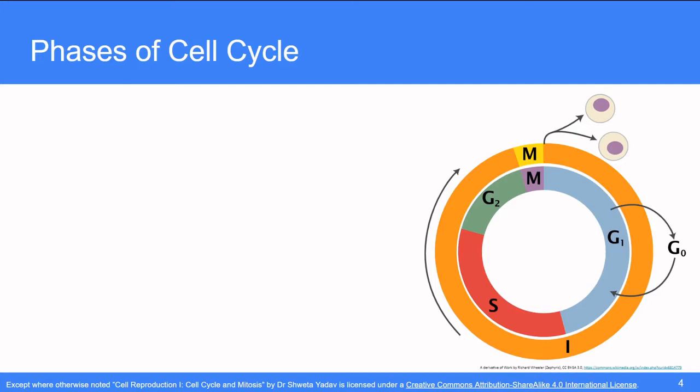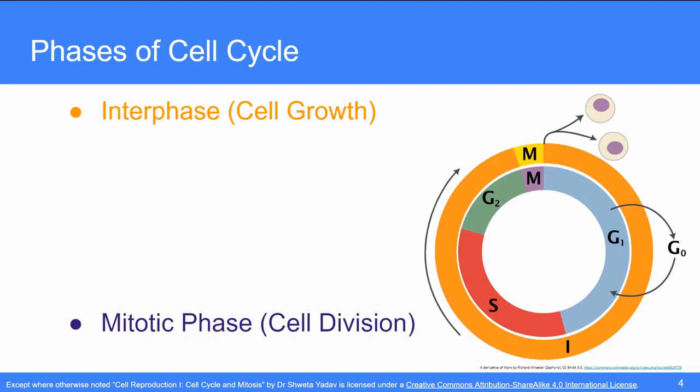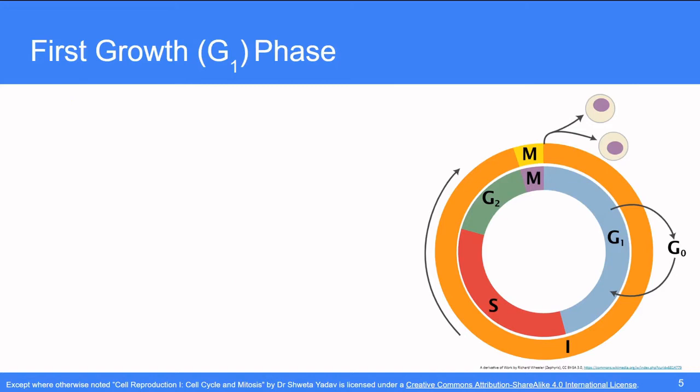Let us now talk about the different phases of cell cycle. The cell cycle is divided into two main phases. These are interphase, the largest phase and it is also known as the cell growth phase. The second phase of the cell cycle is the mitotic phase or the cell division phase. This phase is of very short duration. The interphase is further divided into three sub phases: G1, synthetic phase S and G2 phase.